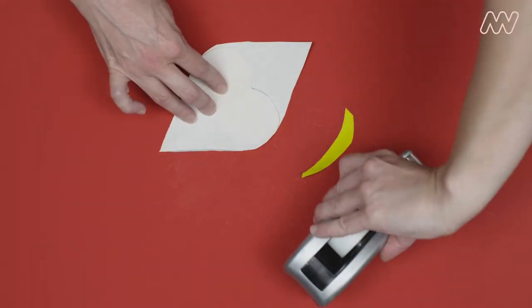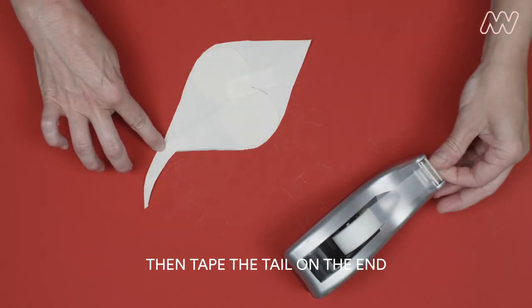Step 4. Tape the hearts together, then tape the tail on the end.